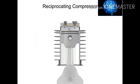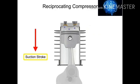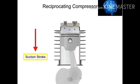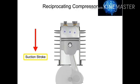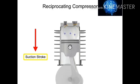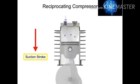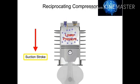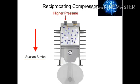As the piston moves downward on its suction stroke, the volume increases within the cylinder. As the volume increases, the pressure within the cylinder becomes lower than the inlet air pressure. This allows the higher pressure outside air to push open the inlet valve and allow more air into the cylinder.